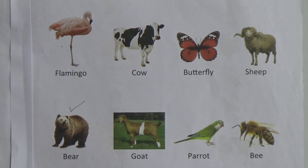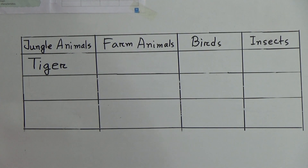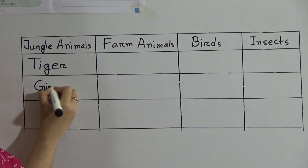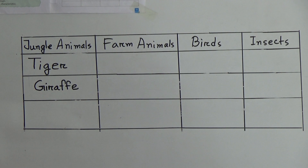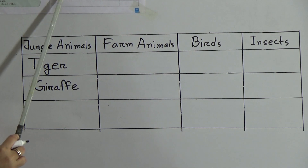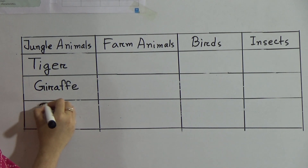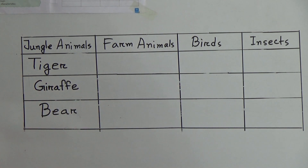Let's write these. First one here is tiger, spelling T-I-G-E-R, tiger. This one is jungle animal. And the second one is giraffe, spelling G-I-R-A-F-F-E, giraffe. And next jungle animal name is bear, spelling B-E-A-R, bear. Next point here is farm animals.